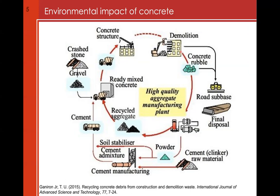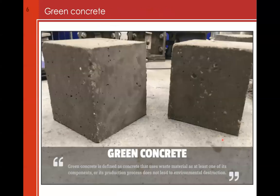Several researchers think about the life cycle of a concrete structure, starting from the material sourcing and the energy needed. Cement is magic — it's a powder, you mix it with water and obtain something strong — but when you manufacture it, you have to use a lot of energy to produce what is called the clinker. All strategies in this direction are called strategies to produce green concrete. Green concrete is the concrete that uses waste material as at least one of its components, or whose production process does not lead to environmental destruction.